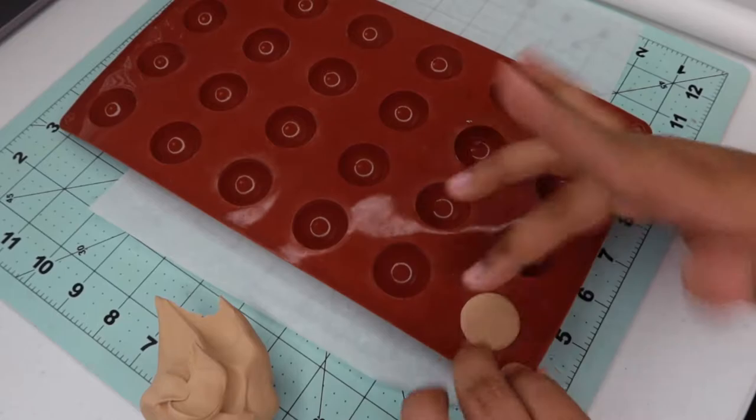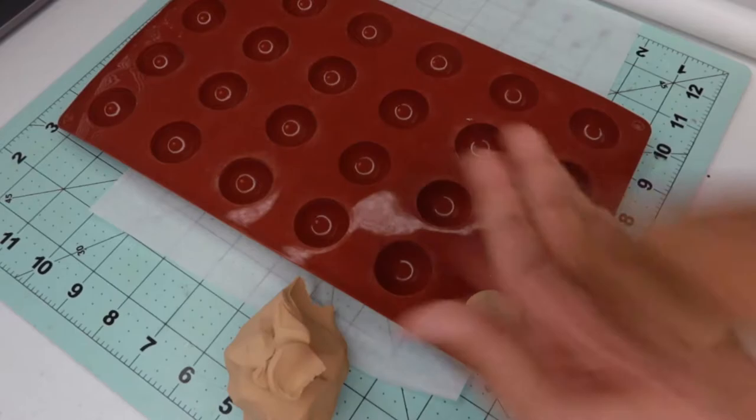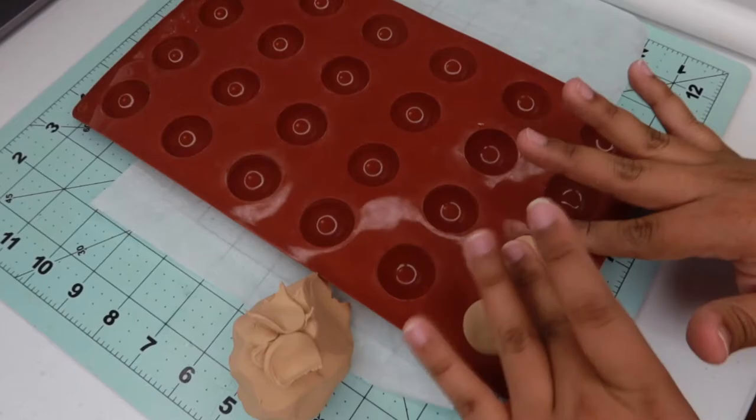If you do grab too much like I did here, you can always remove some and then pop it back in. You do want to make sure you have enough for your concha base, but not too much where it's overflowing and looks too plump.